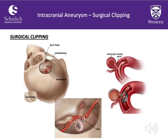Due to the high morbidity and mortality from aneurysm rupture, treatment is a necessity for symptomatic lesions and is generally recommended for asymptomatic lesions when the lifetime risk of rupture exceeds the risk of treatment. Aneurysm morphology, size, and location are important in determining the surgical approach, as are patient age, condition, and comorbidities. Intracranial aneurysm clipping is performed through a craniotomy or craniectomy; using microscopic techniques, the aneurysm and parent vessel are identified, the neck is isolated, and a clip is placed across it, excluding the aneurysm from circulation.